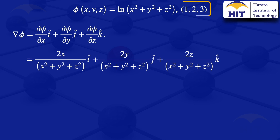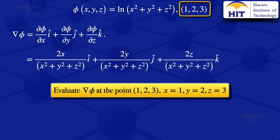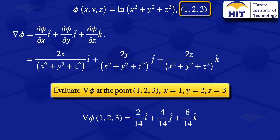We now evaluate grad phi at the point (1, 2, 3), so x equals 1, y equals 2, z equals 3. Substituting into the gradient, the denominator becomes 1 squared plus 2 squared plus 3 squared, which gives us 14. Therefore, grad phi at the point (1, 2, 3) equals 2 over 14 times i, plus 4 over 14 times j, plus 6 over 14 times k.